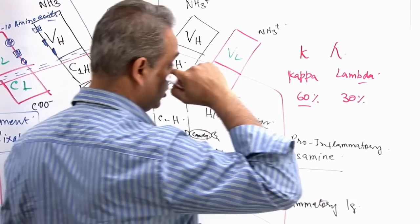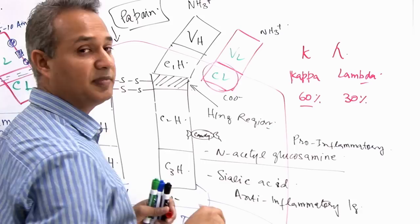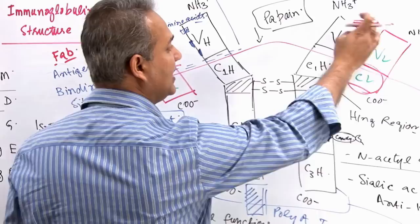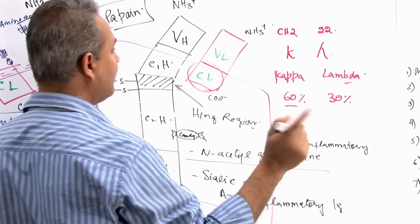What that means is that the constant region here of a light chain is either made up of kappa chain or it is made up of lambda chain. Now, the genes that are responsible for these areas are, so kappa chain is in chromosome number 2, lambda chain genes are on chromosome number 22 and heavy chain variable region genes are on chromosome number 14, chromosome number 14.